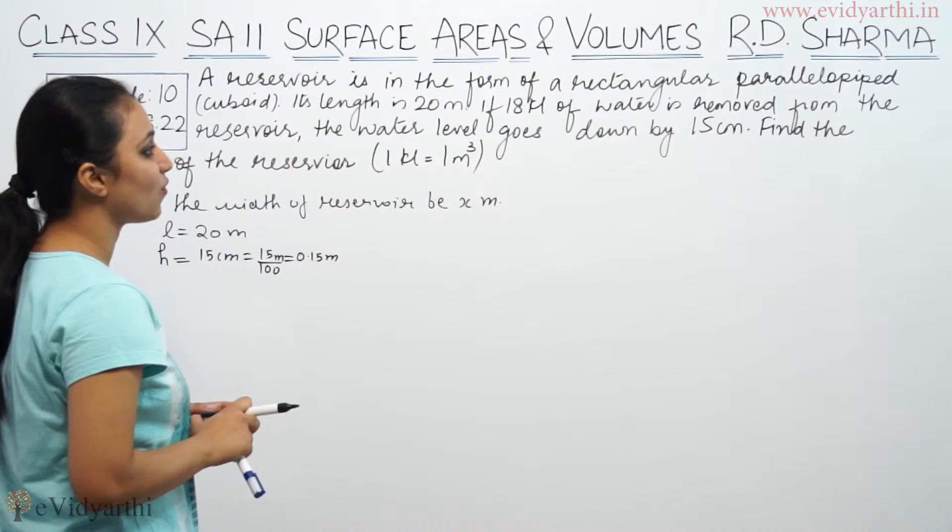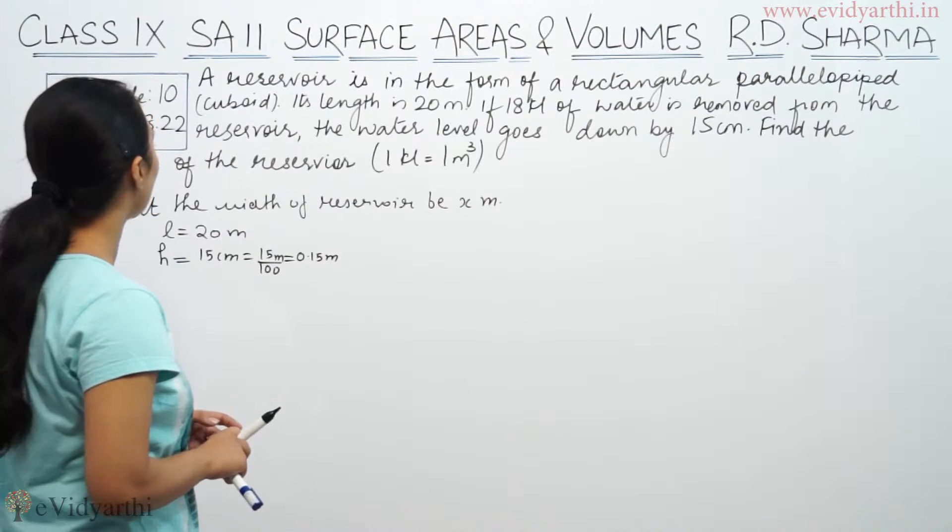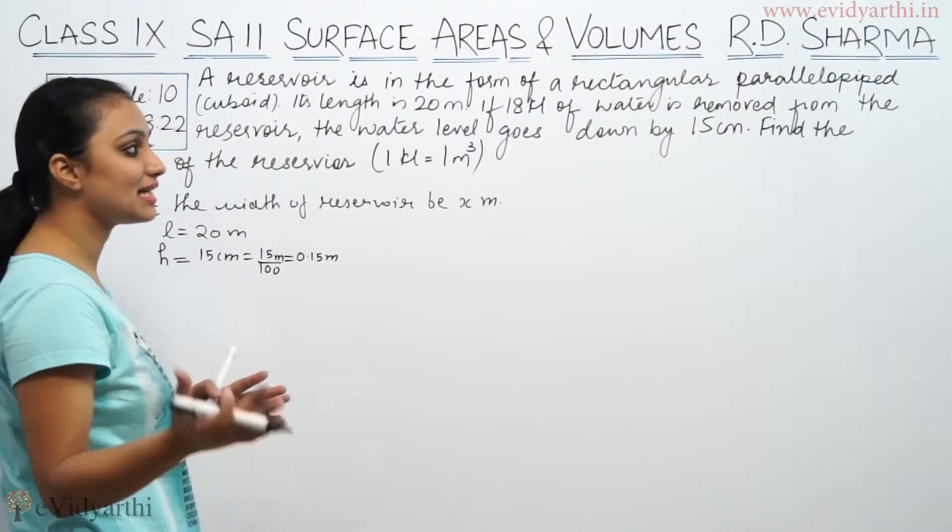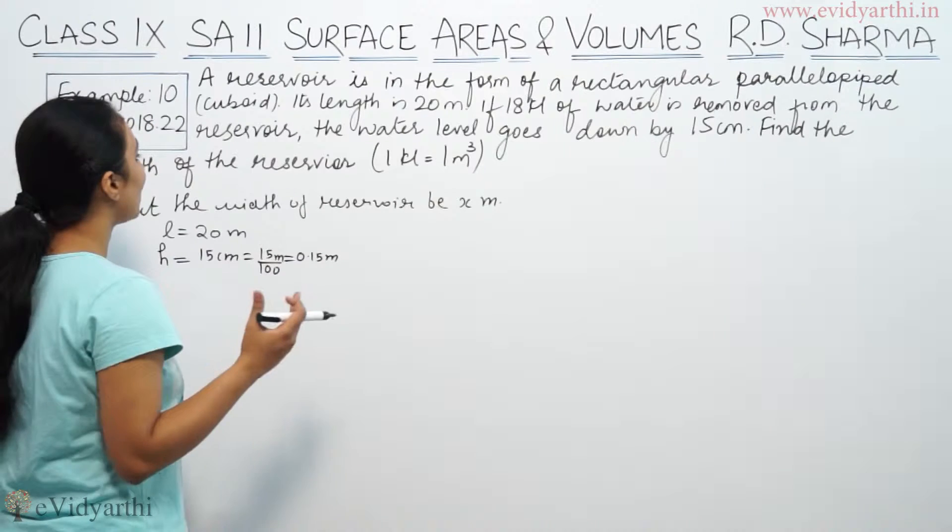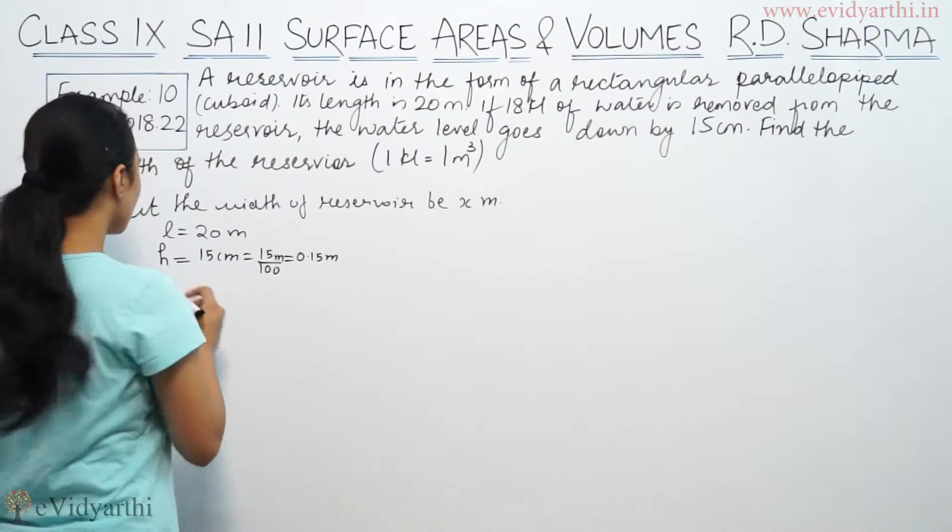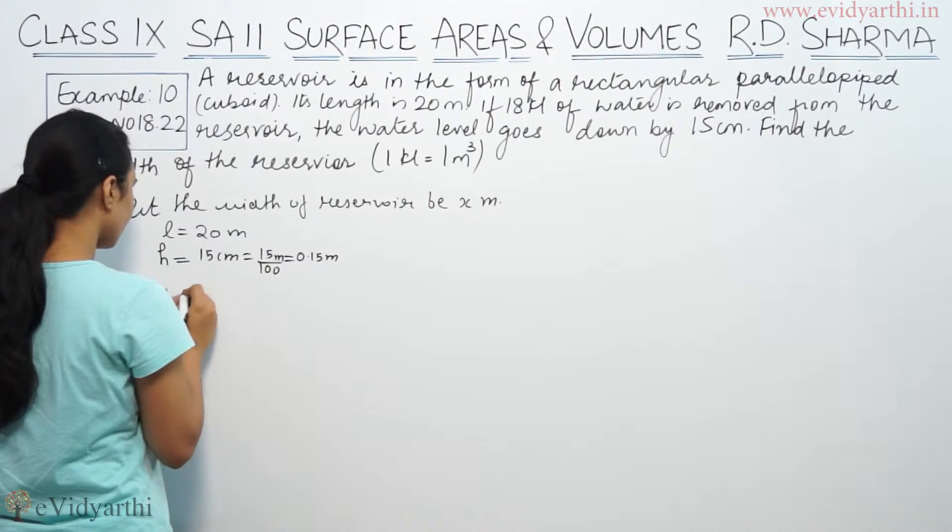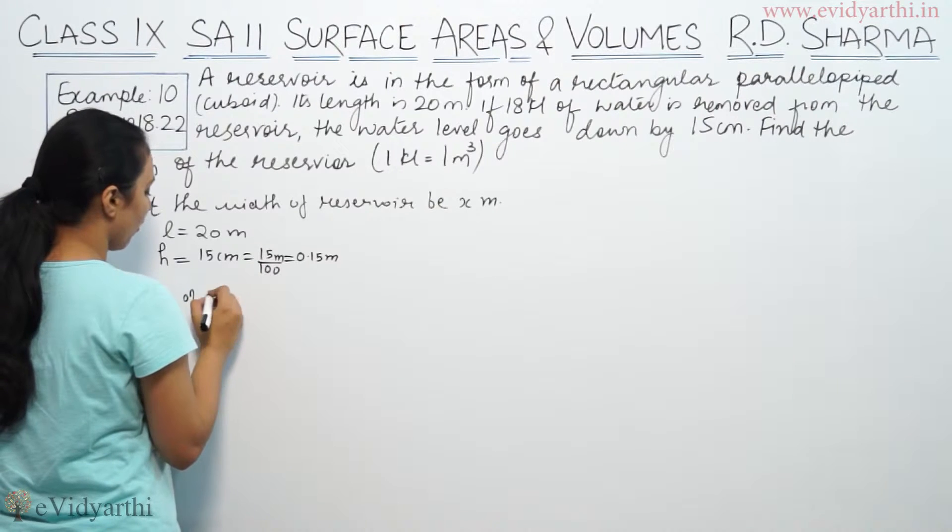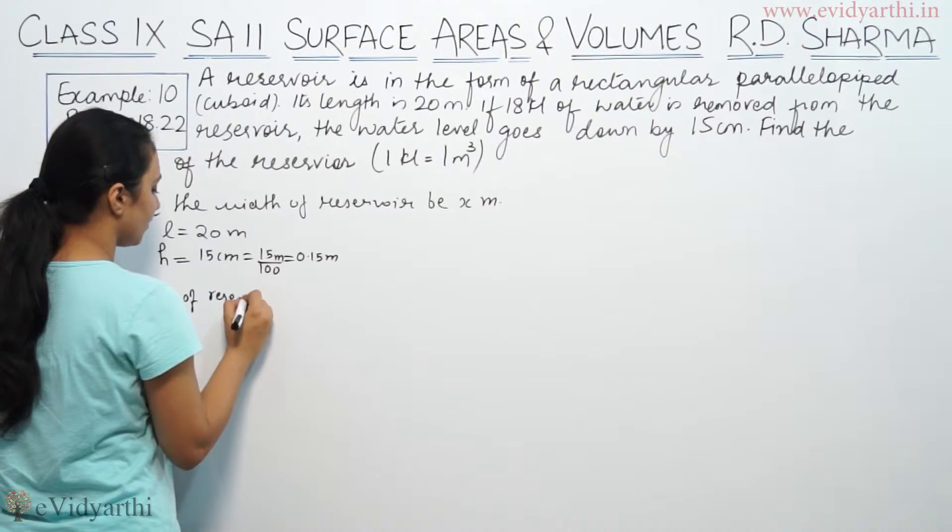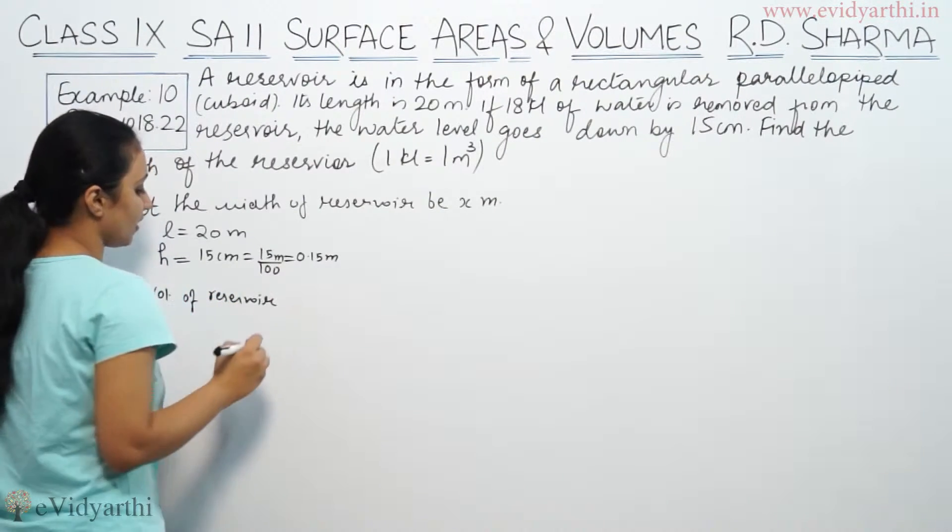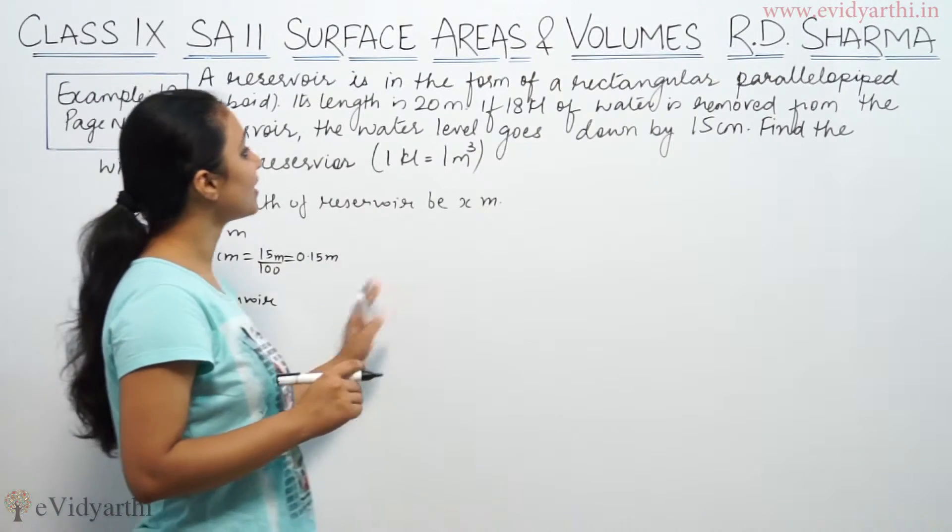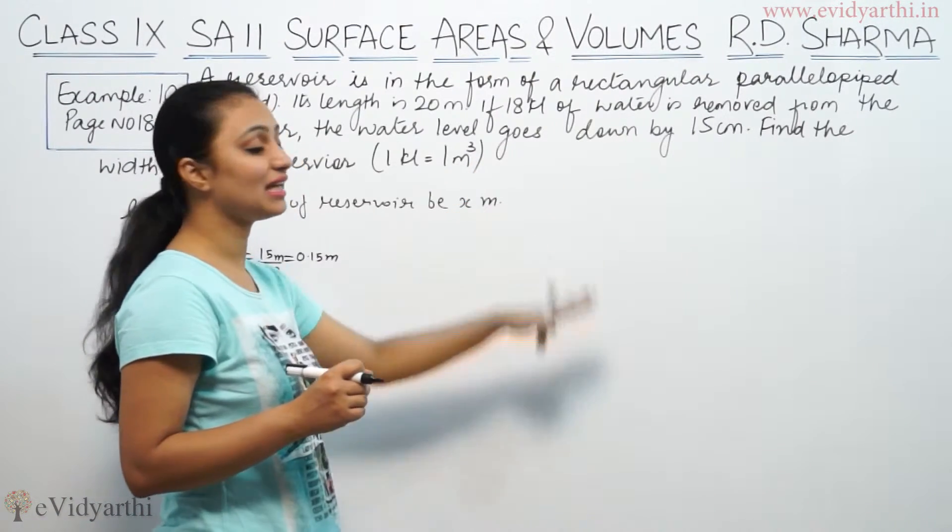Now, if 18 kiloliters of water is removed from the reservoir, so find the width of the reservoir. So volume of reservoir is 18 kiloliters.